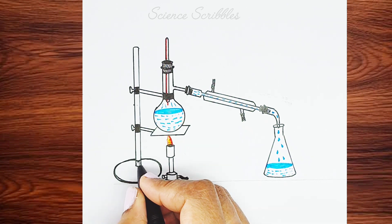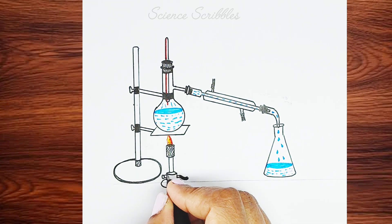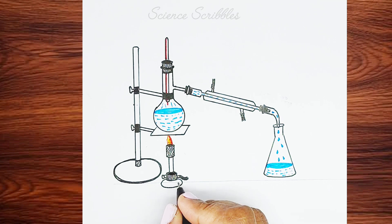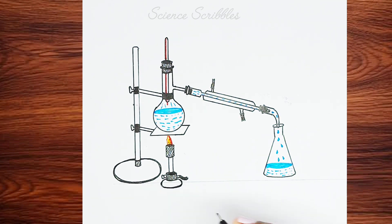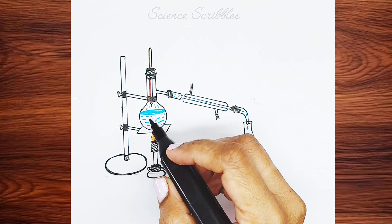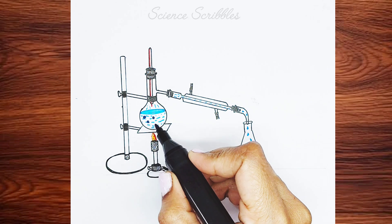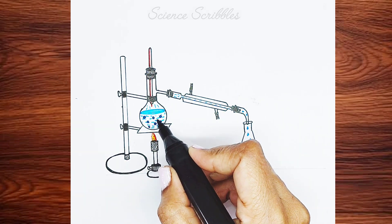I am shading the Bunsen burner using stripes. If you want, you can do the same. I am also thickening the base. Now, let's add dots, big, bold dots, to indicate that this is salt water.